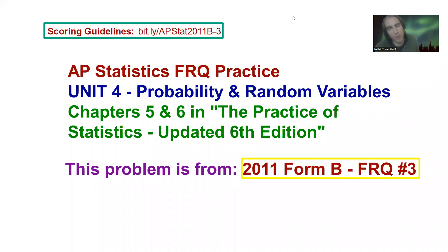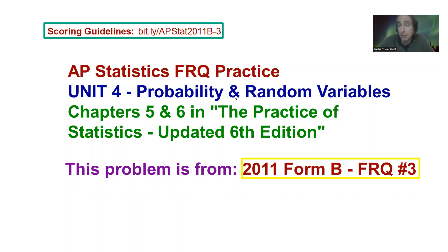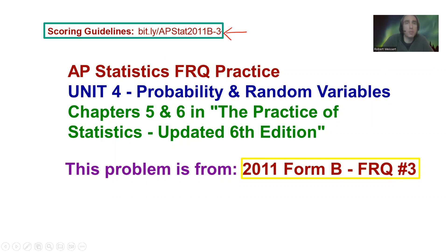Welcome to this video. We're going to be going over a free response question dealing with probability. This is unit four in the AP Stats sequence. If you have the Practice of Statistics updated sixth edition textbook, this will correspond to chapters five and six. This problem specifically is from 2011 Form B free response question number three. You can check the scoring guidelines up here — I have a link: bit.ly/apstat2011b-3.